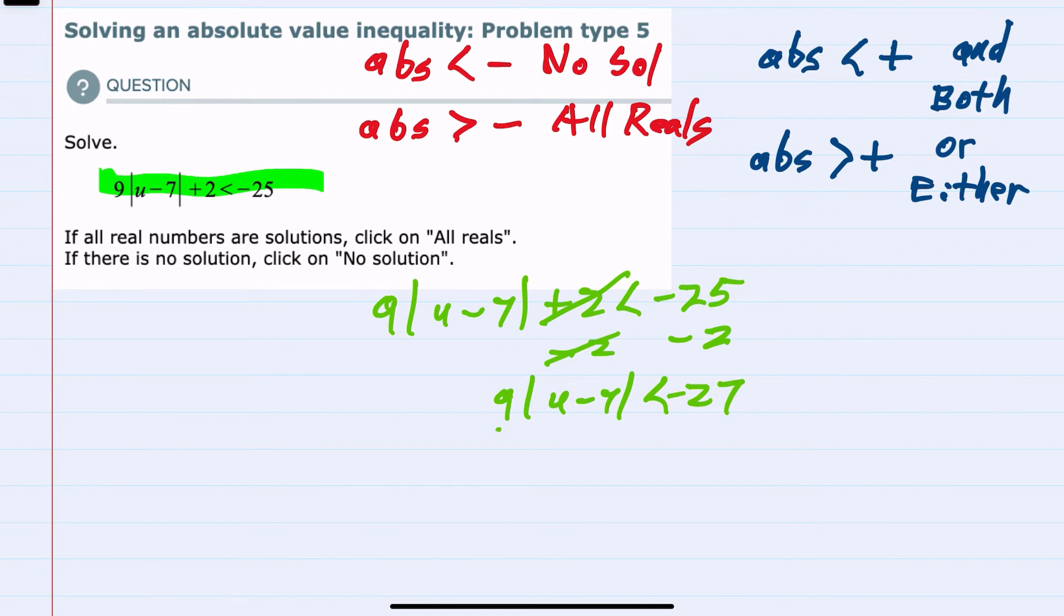And then we would divide by 9 on both sides to get the absolute value by itself, and it is now less than a negative 3.